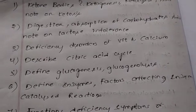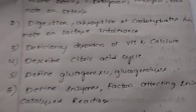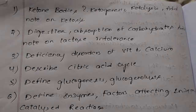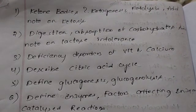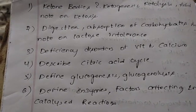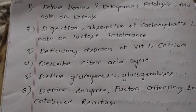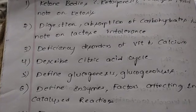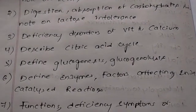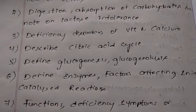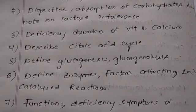Ketone bodies. Ketogenesis, ketolysis, and add a note on ketosis - it is a very important question. Digestion and absorption of carbohydrates. Add a note on lactose intolerance. Deficiency disorders of vitamin A and calcium. Describe citric acid cycle. Define gluconeogenesis and glycogenolysis.